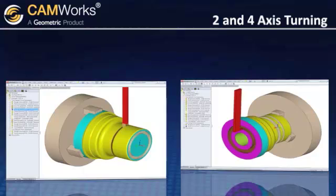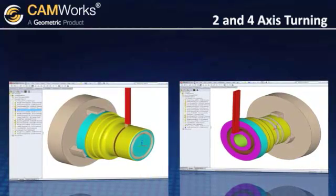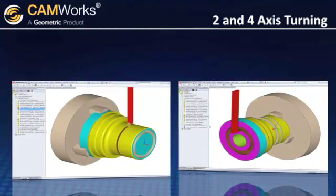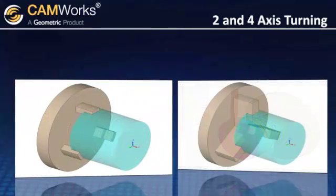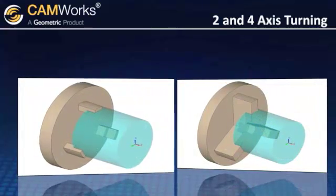Front and rear turret configurations are supported on main and sub spindles. Multiple chuck configurations can be saved and accurately simulated.